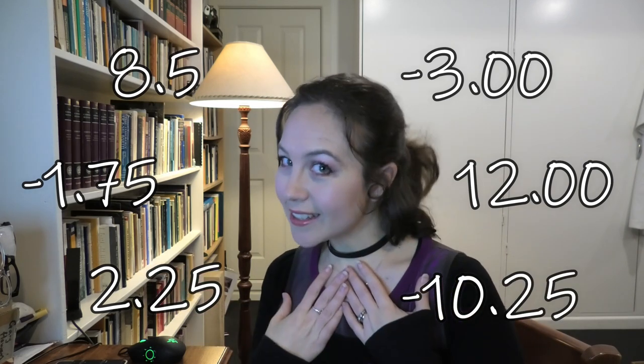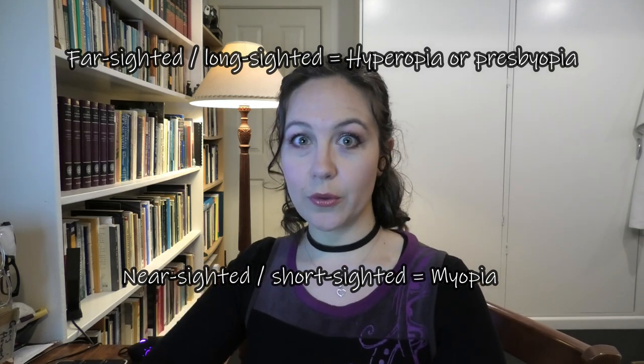Part of the EndMyopia method is learning how to measure your own vision. Your vision is measured in diopters. So if you know the correction in your glasses, it's a number. If you're short-sighted or nearsighted and have myopia like me, then your number is going to start with a negative. If your vision starts with a positive number, then you are long-sighted or far-sighted, which indicates hyperopia or presbyopia. That is not what we're dealing with here, so this probably isn't the video for you. I've only learned about myopia, so that's what I'm talking about today.